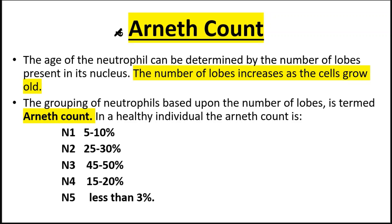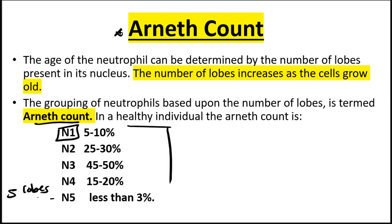The Arneth count is the number of lobes present in the neutrophil nucleus. The number of lobes increases as cells grow and mature. In a healthy individual: N1 (one lobe) is 5 to 10 percent; N2 (two lobes) is 25 to 30 percent; N3 (three lobes) is 45 to 50 percent; N4 (four lobes) is 15 to 20 percent; and N5 (five lobes) is the least common.